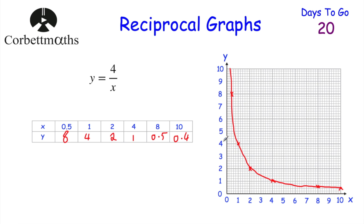Looking at the shape of the reciprocal graph, it will always be above the x-axis. The x-axis is what we call an asymptote - this graph will approach the x-axis but never reach it. Likewise, the y-axis is an asymptote. As you get closer to the y-axis, 4 over x keeps getting bigger and bigger, but never reaches it because 4 divided by 0 is undefined.